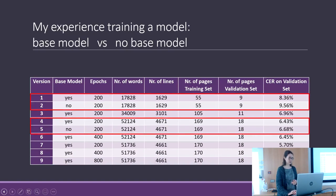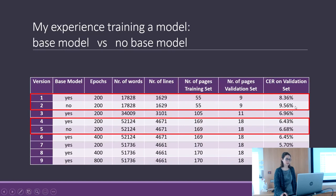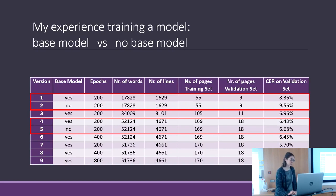Here you can see the data from the nine versions and the difference between using a base model versus not. In my case, the base model is the Italian Administrative Hands model I created collaboratively. In version 1 I used the base model; in version 2 I didn't — and the difference in character error rate is quite significant. The same happens between versions 4 and 5.